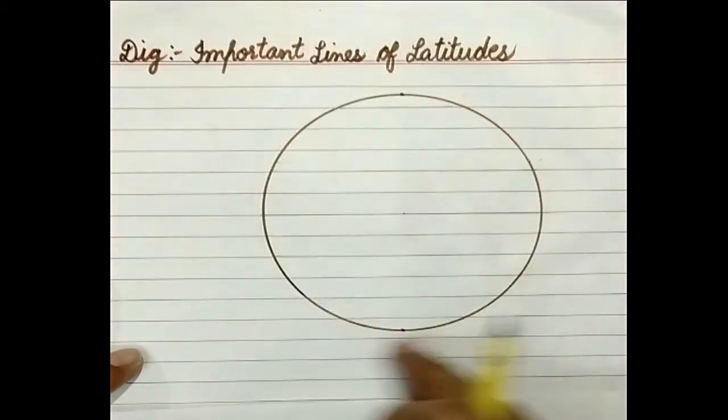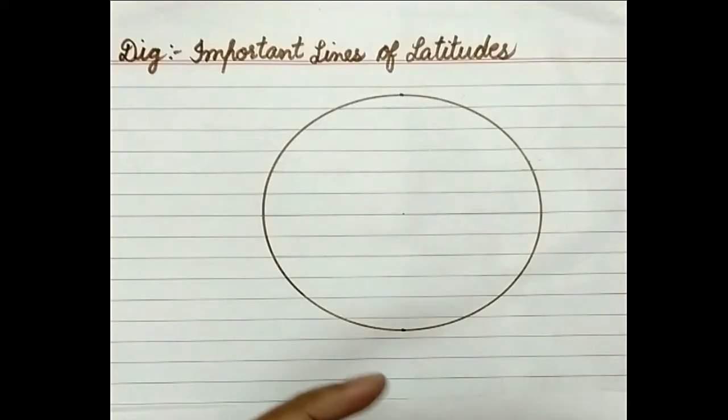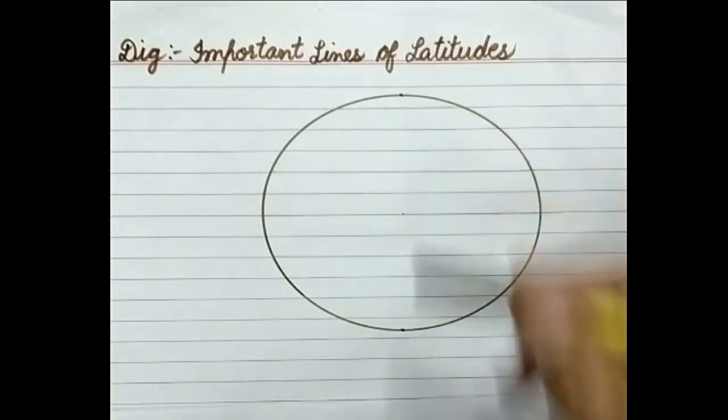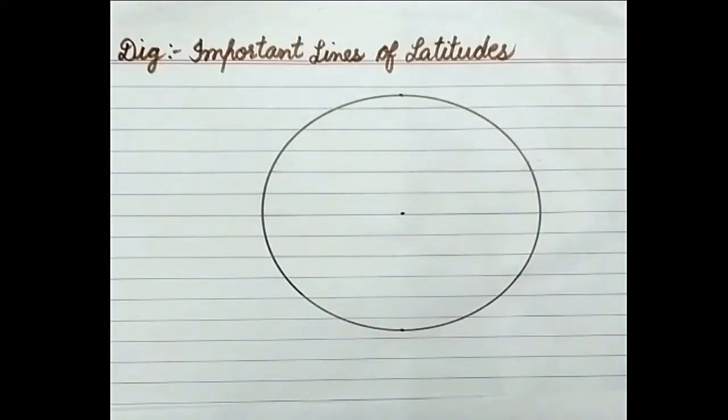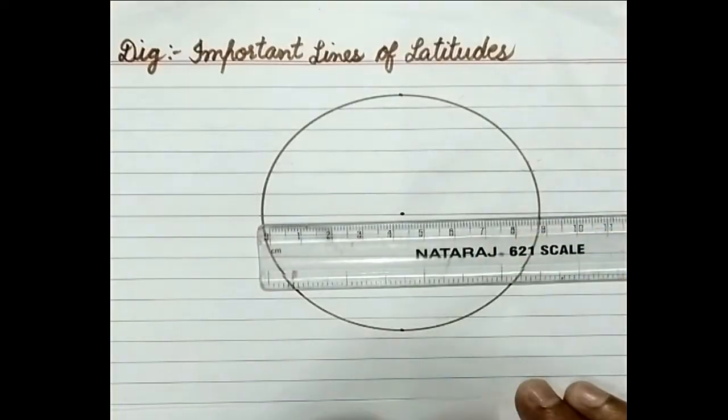First of all you are to draw a circle with the help of compass. I will suggest you don't use bangle because you need a center point and it will be done only if you will use compass. So I have drawn a circle here with 4.5 cm radius.